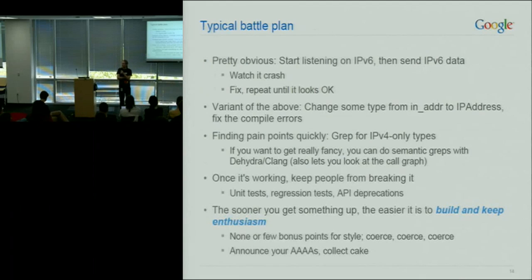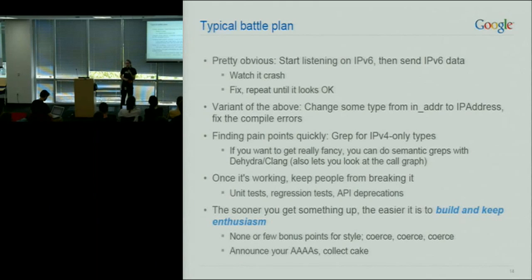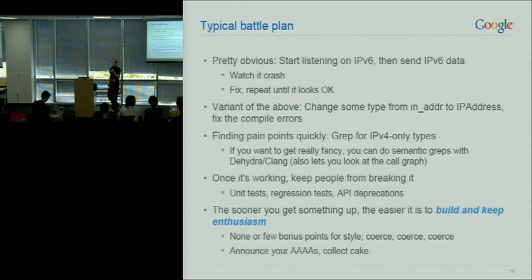The obvious approach: test it. Start sending IPv6 traffic to your service and watch it break. When that gets fixed, try it again until you're happy. If you're using a statically typed language like C++, you can grep for the types — grep for in_addr or old_ip_address. We've been doing experiments with static analysis using a GCC plugin called Hydra — you can probably also do it with Clang. But in general, low-tech works. Start at the obvious end so your users can get your AAAA record.